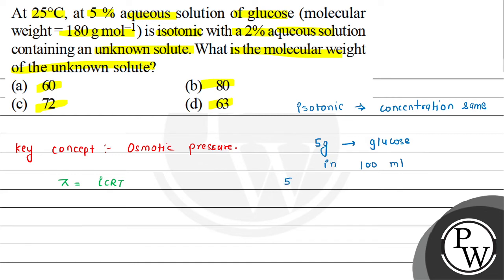We can write 5 divided by 180 equals 2 divided by M, where 5 comes from the 5% glucose solution and 2 from the 2% unknown solution. This M is what we need to calculate. So M equals 2 times 180 divided by 5, and M comes out to be 72.